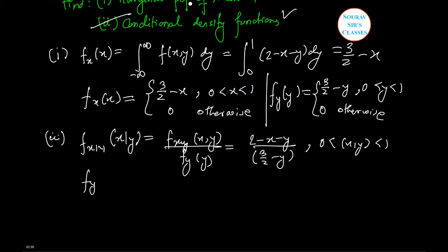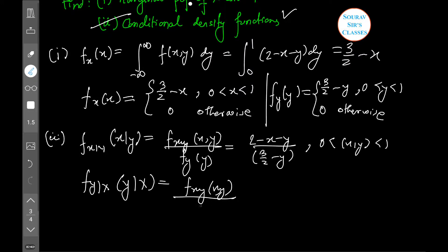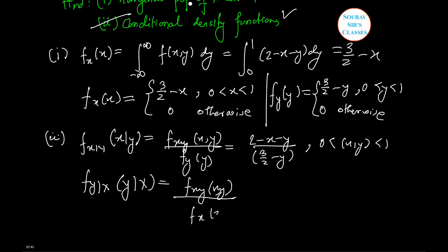Similarly f y given x is such that y given x equals to fxy into xy divided by fx into x which is equals to 2 minus x minus y divided by 3 by 2 minus of x, that is 0 as x and y lies between 0 and 1.